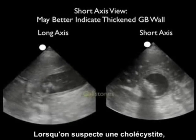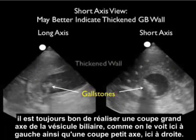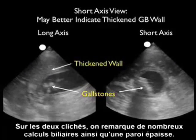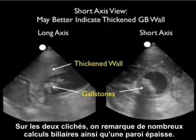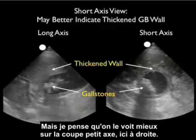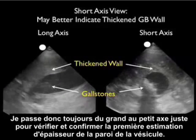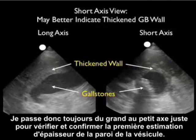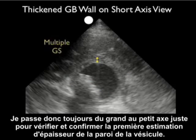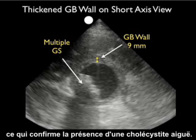When imaging a gallbladder with possible cholecystitis, it's always good to look in a long axis scan as shown here to the left, and a short axis scan as seen to the right. In both images we note a large concretion of gallstones, but notice the thickened gallbladder wall, which is much better seen on the short axis scan to the right. I always swivel the probe from long to short to get a secondary assessment of wall thickness. Stilling that last image in short axis and measuring the anterior wall, it comes in at 9 millimeters — very thickened, fulfilling the criteria of acute cholecystitis.